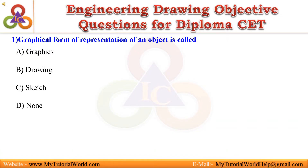Question 1: Graphical form of representation of an object is called — A. Graphics, B. Drawing, C. Sketch, D. None. Answer is Drawing.